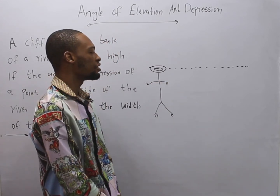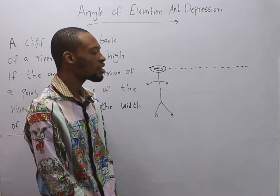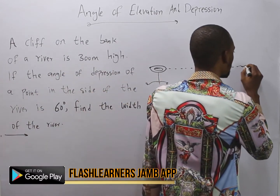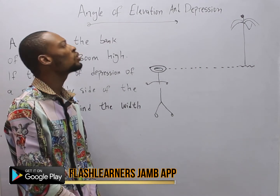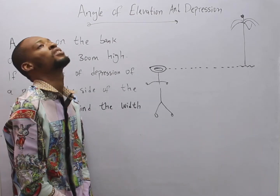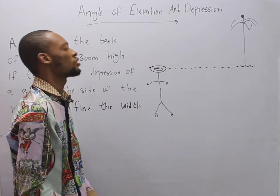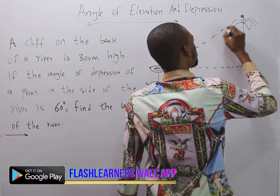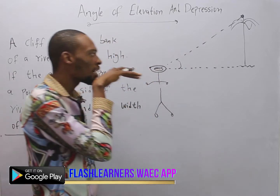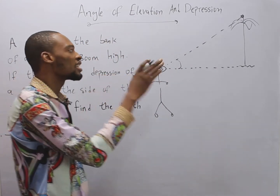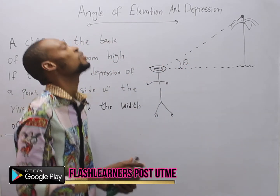My eye level is straight. Now if, as I'm looking, I see a tree — this is the root and this is the tree — and I look up to the top of the tree, my eyes have left the horizontal and are going up. This angle between my normal horizontal look and the top of the tree is called the angle of elevation. So angle of elevation is when you look up.